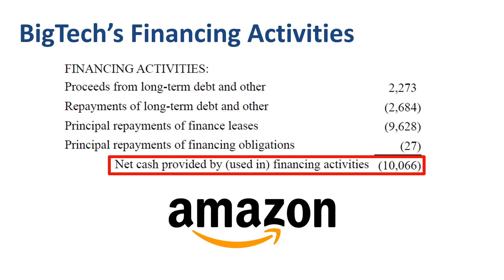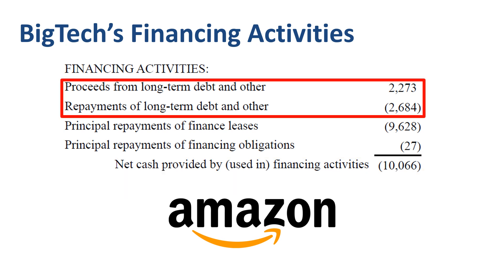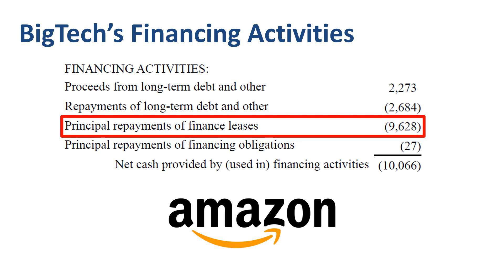If we go to line item detail, we see two lines related to long-term debt: a cash inflow from the proceeds of issuing long-term debt, and a cash outflow for the repayments of long-term debt. The real big one in this section is $9.6 billion of repayment of finance leases, explaining almost all of the outgoing cash movement in cash from financing activities for this year.